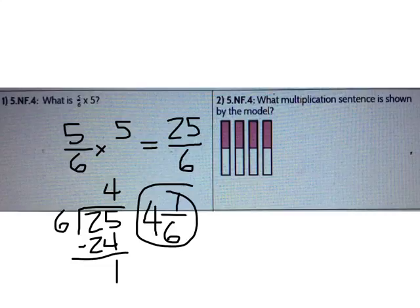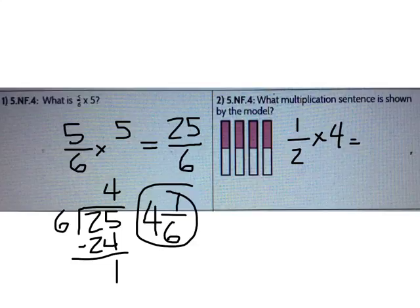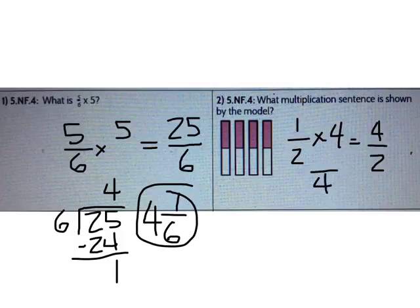Let's look at number 2. What multiplication sentence is shown by the model? Remember, multiplication is putting together equal groups. What fraction is shown by each group? 1/2 is shown by each group. How many groups of 1/2 are there? There are 4 groups. So my multiplication problem is 1/2 times 4. What's 1/2 times 4? Write your answer as an improper fraction. 1/2 times 4 is 4 over 2. Now I can divide to change it into a whole number. What's 4 divided by 2? It's 2.